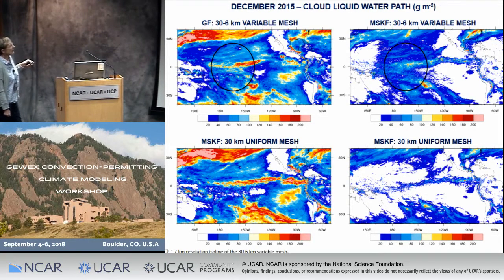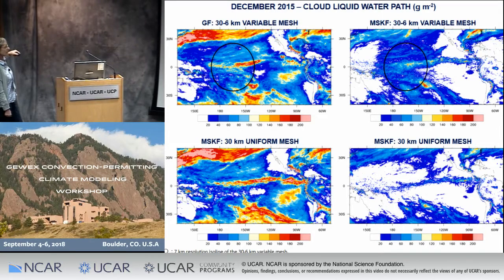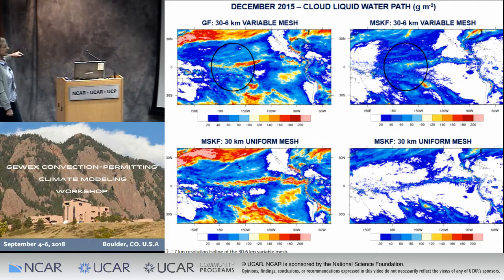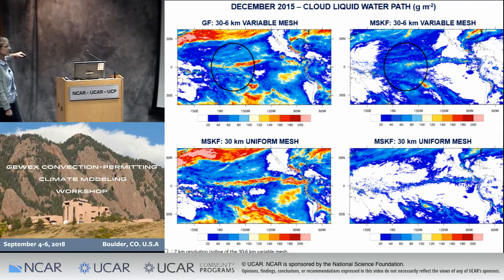In terms of cloud liquid water paths, the 30-to-6 km variable resolution mesh shows a slight decrease in cloud liquid water path over the refined area of the mesh. MSKF has a smaller liquid water path than GF, consistent with what we saw earlier. There is a different distribution of liquid water path over the coarse area of the mesh between the two simulations — again, reflecting dynamical-physical interactions that produce very different patterns. Interestingly, the variable resolution mesh using MSKF shows an increase in shallow convection and low-level clouds that we don't see in the 30-kilometer mesh.